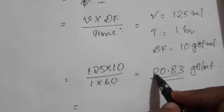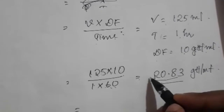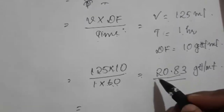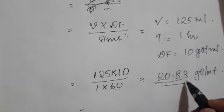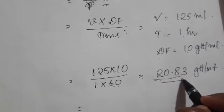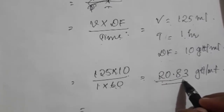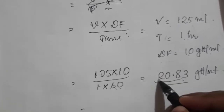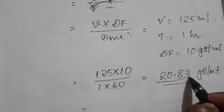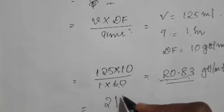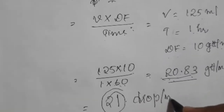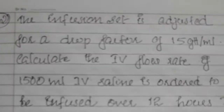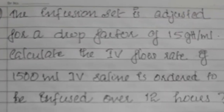Calculating this gives 20.83 gtt per minute. Since 20.83 is a fraction, we cannot administer a fraction of a drop. We need to round to the nearest whole number. Since 20.83 is nearest to 21, the answer is 21 drops per minute.